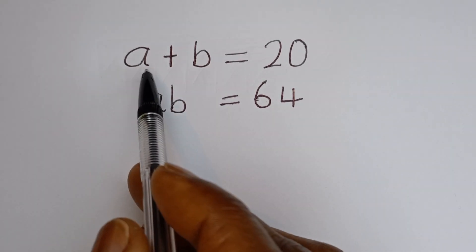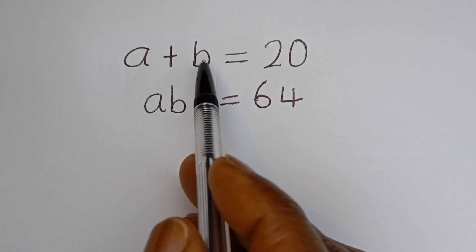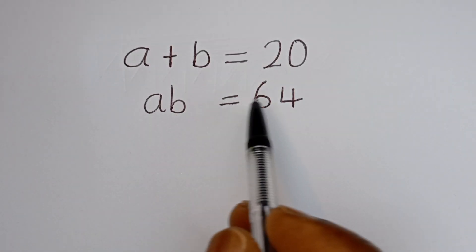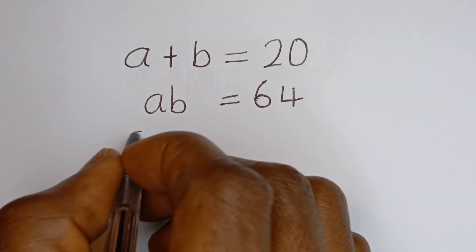Hello. How to solve for a and b in this equation: a plus b is equal to 20, and ab is equal to 64. Solution.